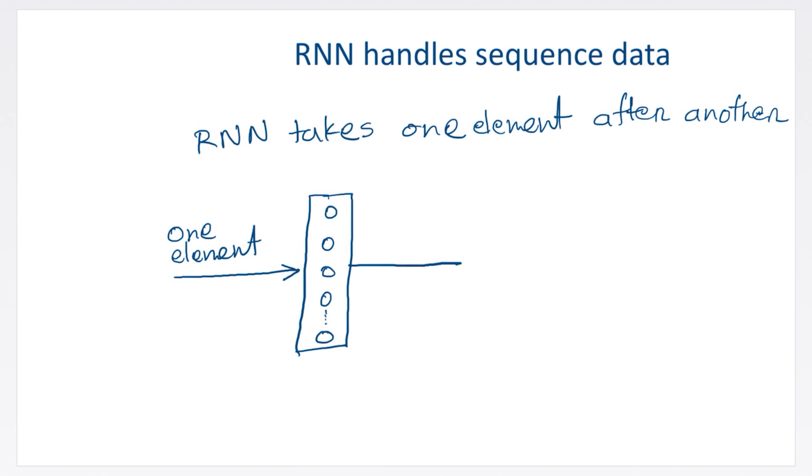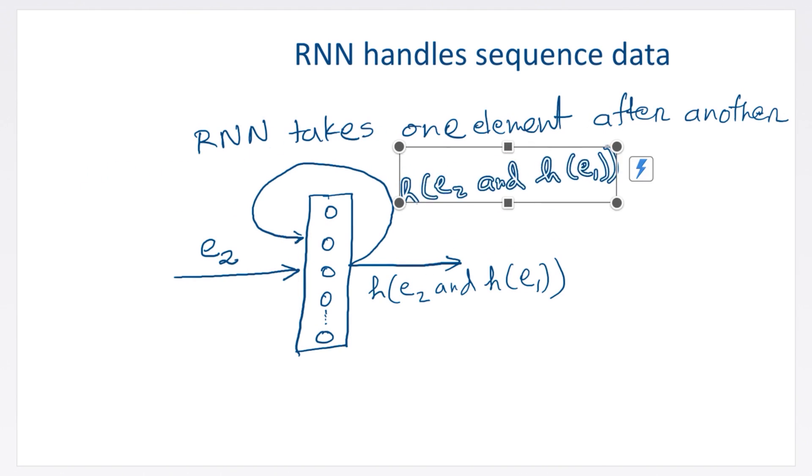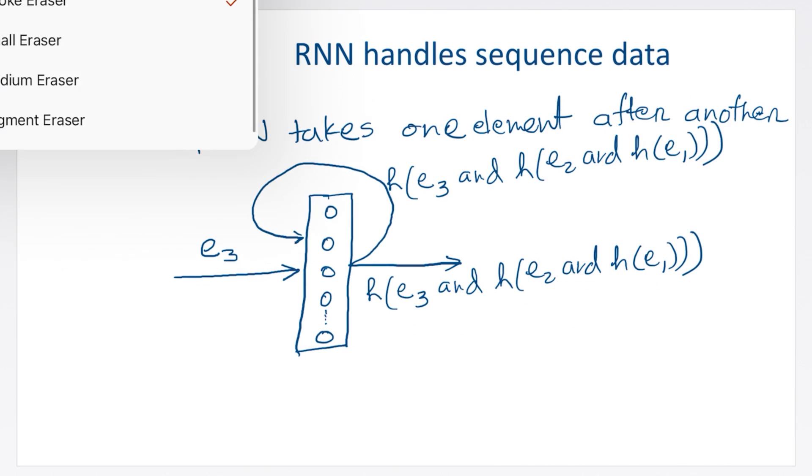So the RNN can take a sequence, one element after another, and learn from that sequence. Here is the abstract form of an RNN. As the input of an RNN first, one input element of the sequence comes. The element is passed through the hidden layer.